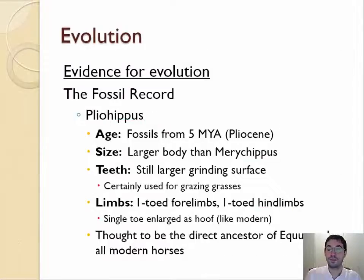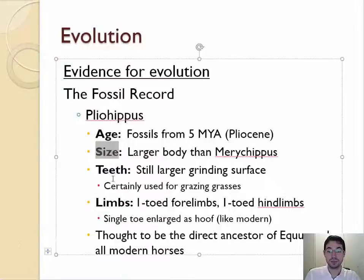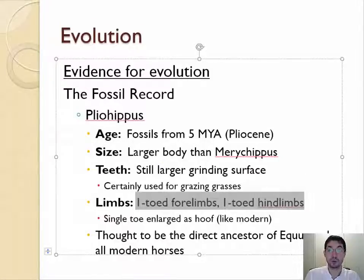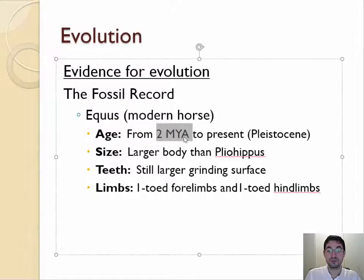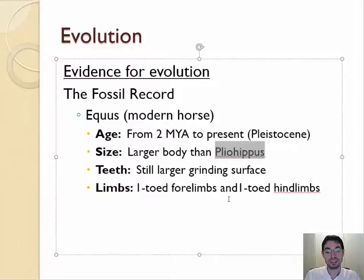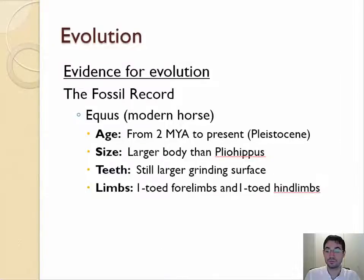Then 15 million years later we have Pliohippus, which is even bigger in size, with even bigger teeth used to eat grasses, and now they only have one toe, like modern horses. And finally, modern horses, which first appear in the fossil record about 2 million years ago, were even larger than Pliohippus, with even bigger teeth, and just like Pliohippus, one toe.